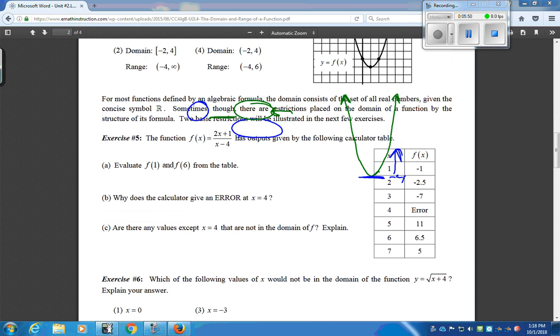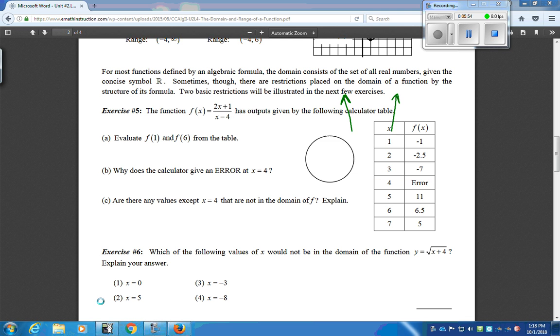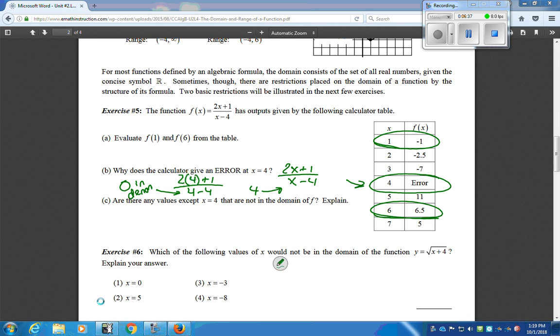And then for the last one, we kind of have a special case here. They give us a rational function, which just means it's a function with a fraction in it. They want us to evaluate 1 and 6 in the table. So, you can clearly see the answers for 1 and 6. You can write those down on your paper. And it's asking, why does the calculator give us an error at x is 4? Well, at 4 it says error. And if you look up at the equation, if you were to plug in 4 where that x is, what's going to happen is you're going to get 0 in the denominator. And in that case, it's going to mean that the fraction is undefined.